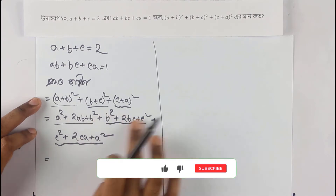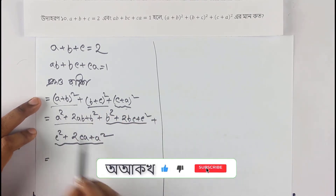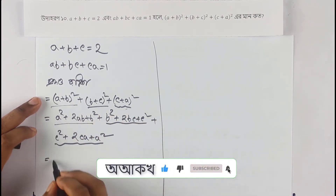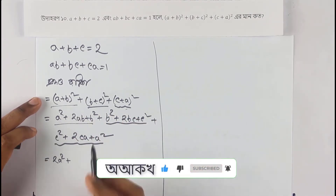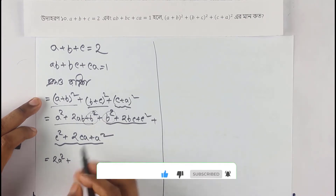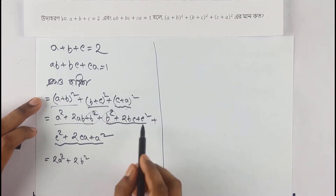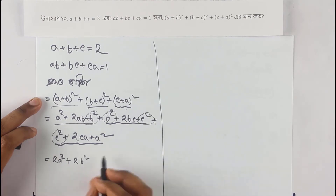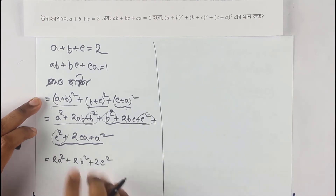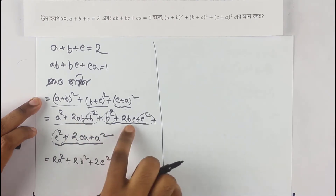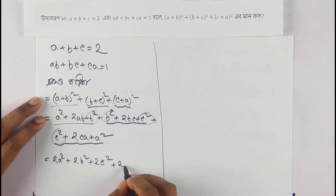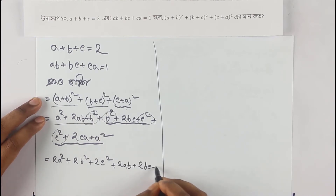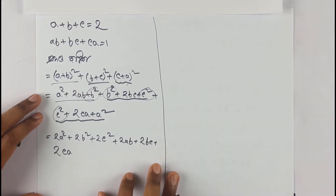Adding all these together, we get: a² plus a² plus 2 — then b² plus b² plus 2 — then c² plus c² plus 2 — and the cross terms: plus 2ab plus 2bc plus 2c plus 2ab plus 2bc plus 2ca.